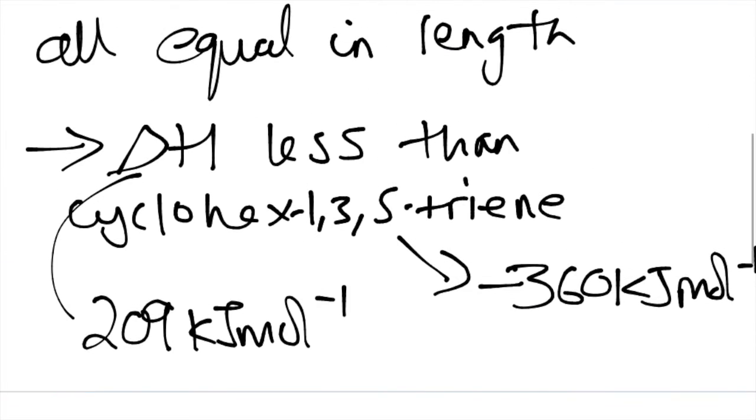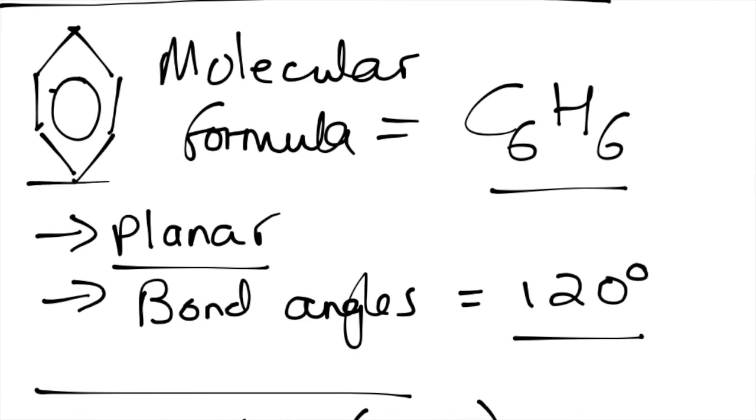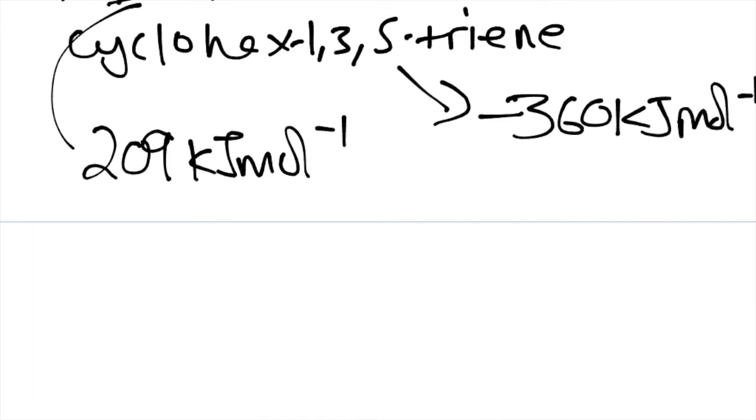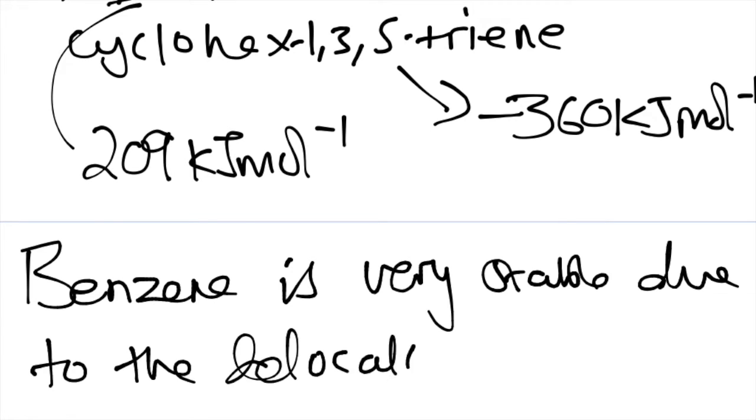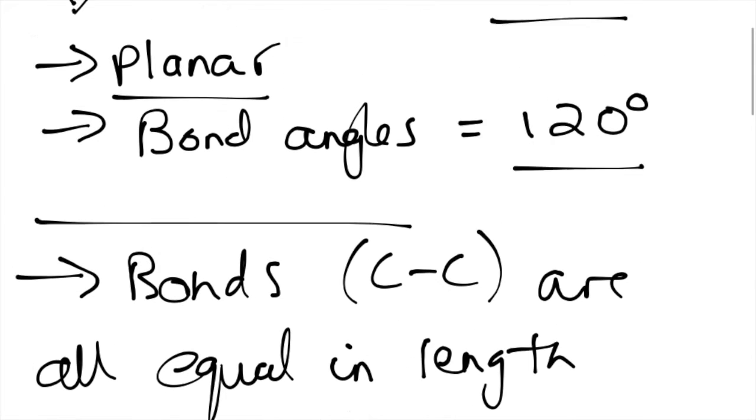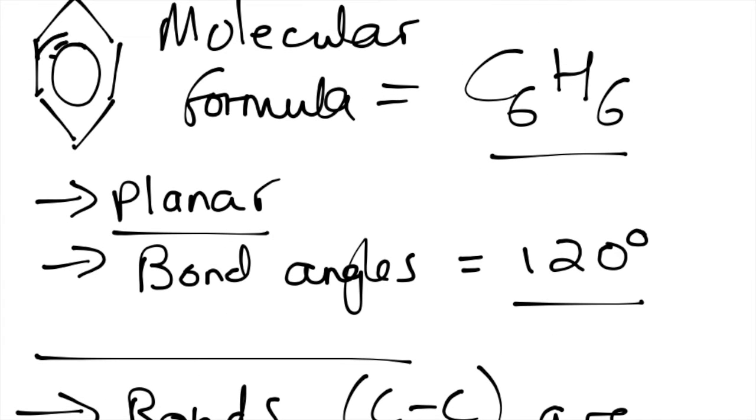What you also need to know is that benzene is more stable. It is very stable due to the delocalized electrons. Delocalized electrons are denoted by this circle.